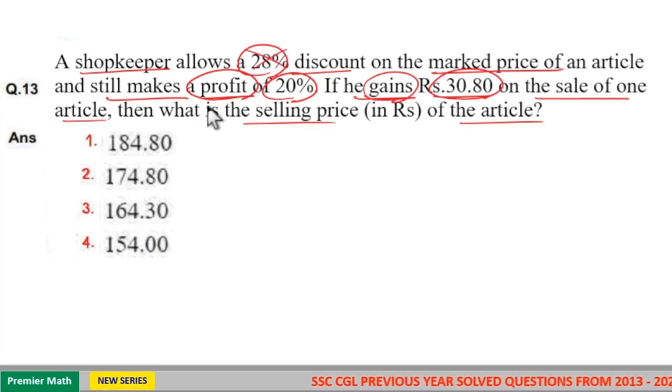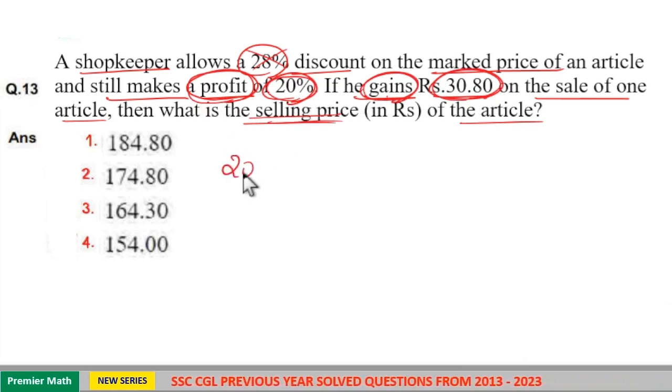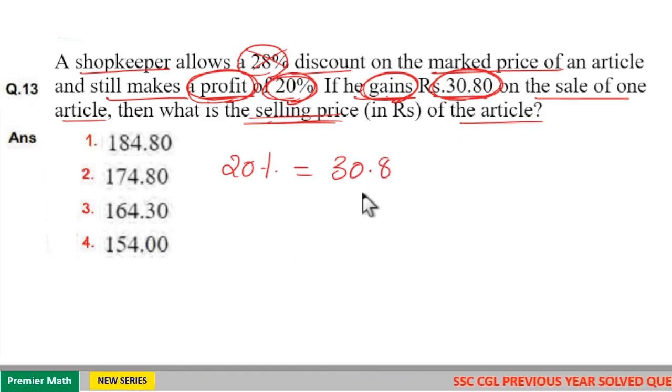Here the question says profit is 20% and gain is 30.8, then we need to find selling price. This is simple because profit and gain are the same. So profit 20% means the gain is equal to 30.8 rupees.